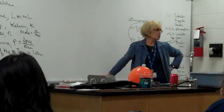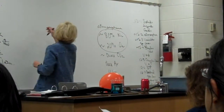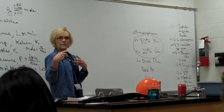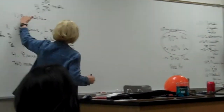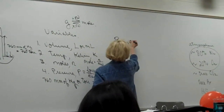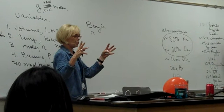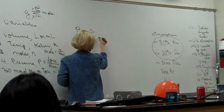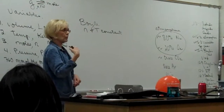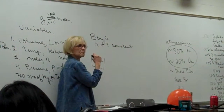Boyle was English and he lived in the 1600s — the same time Galileo and Torricelli were alive. They realized even back then that if you're going to study something, you can only change one variable at a time. When studying gases there are four variables, so when Boyle was doing his work he said: I'm going to keep N constant — the amount of gas I'm working with is going to be constant.